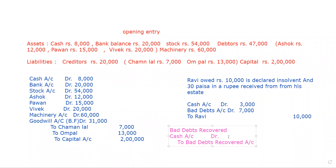The journal entry for bad debts recovered: for example, if the above Rs. 7,000 has been received back, the entry will be cash account debit to bad debts recovered account for Rs. 7,000.